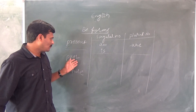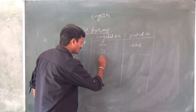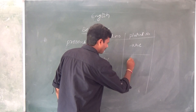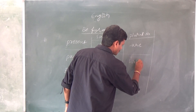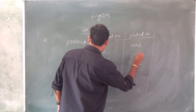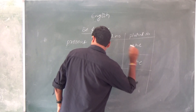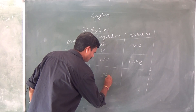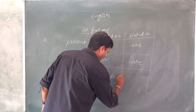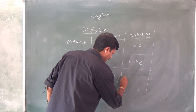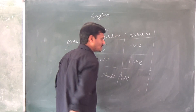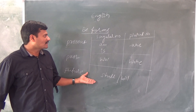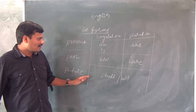Next, in past tense the singular Be form is 'was' and the plural is 'were'. And for future tense we can see 'shall be' — shall and will. These are the Be forms for all three tenses.